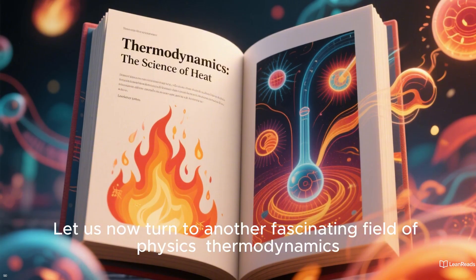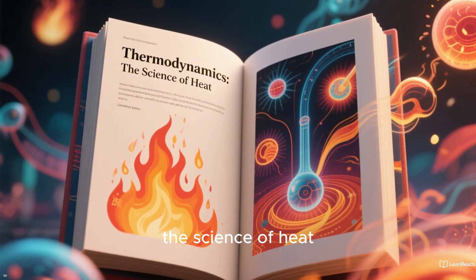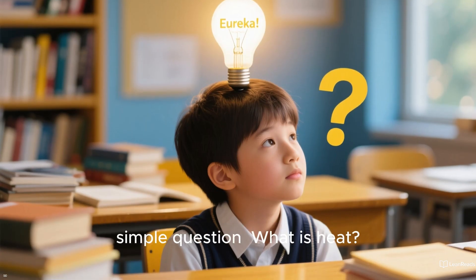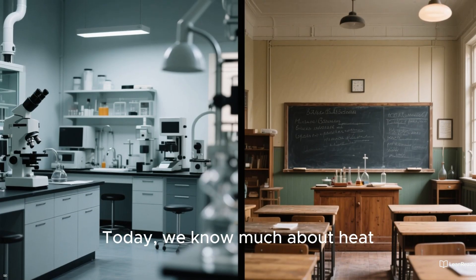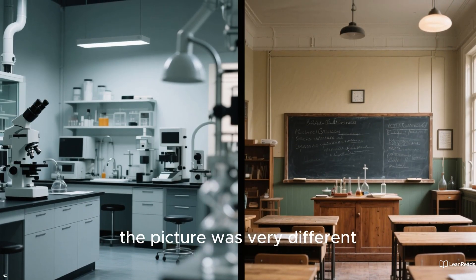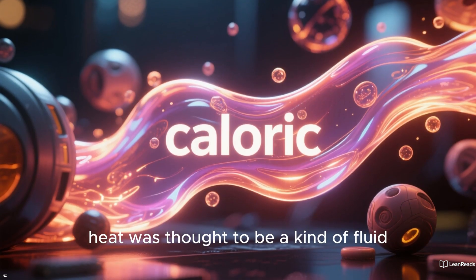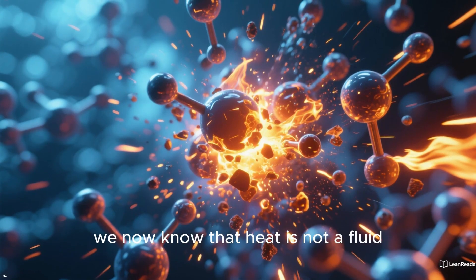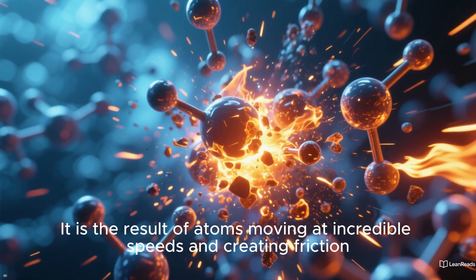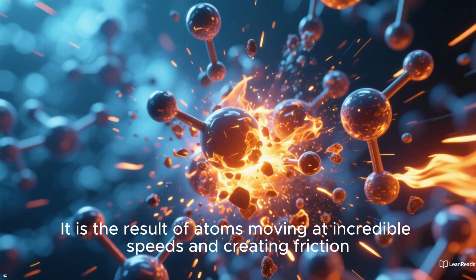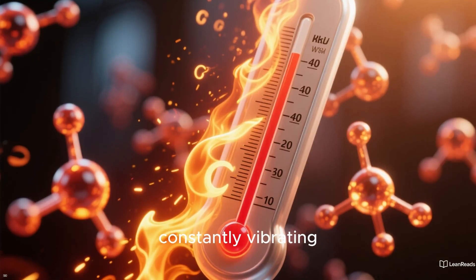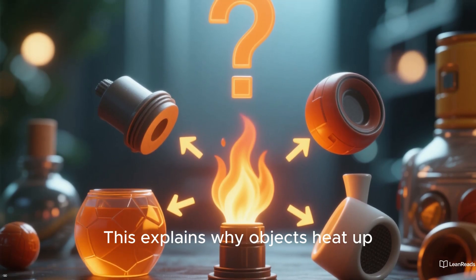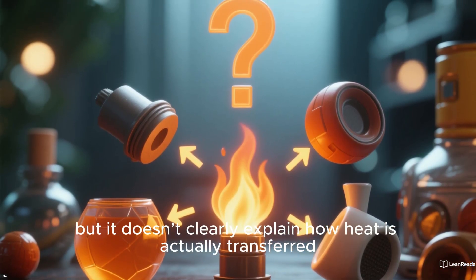Let us now turn to another fascinating field of physics, thermodynamics, the science of heat. It is remarkable that this entire branch of physics arose from a single, simple question: What is heat? Today we know much about heat. But in the mid-19th century, the picture was very different. At that time, heat was thought to be a kind of fluid, a substance called caloric, flowing in and out of bodies. Of course, we now know that heat is not a fluid. It is the result of atoms moving at incredible speeds and creating friction. Atoms are always in motion, constantly vibrating. The faster they move, the hotter the object becomes. This explains why objects heat up, but it doesn't clearly explain how heat is actually transferred.